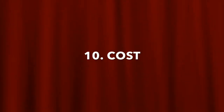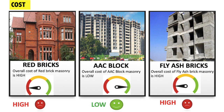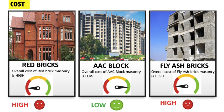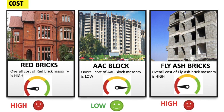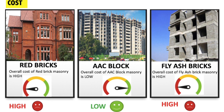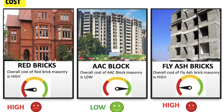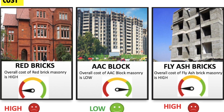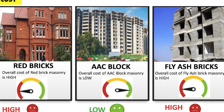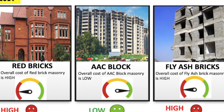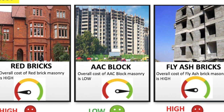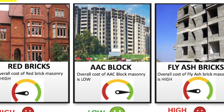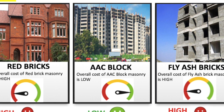Point 10: Cost and Mortar Consumption. Red bricks are cheaper as compared to other masonry units. However, the overall cost is more because they require more mortar due to irregular surfaces and more number of joints. In AAC block, the individual block is expensive but the overall cost of AAC block masonry is low, as it consumes less mortar and saves cost of steel. Fly ash bricks are the cheapest masonry unit but the overall cost is more as they require more mortar.